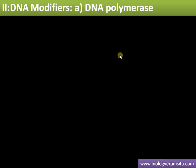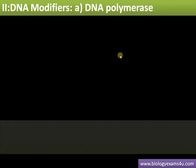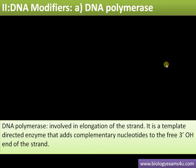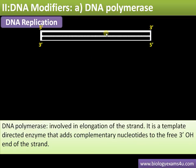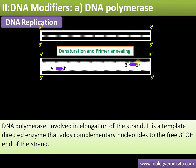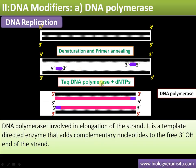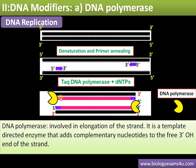The second class of enzymes is DNA modifiers. The first is DNA polymerase, an enzyme involved in elongation of a strand. It adds complementary nucleotides to the free 3'-OH end of a strand. With a primer annealed to a double-stranded DNA molecule, DNA polymerase — such as Taq DNA polymerase — binds to the free 3'-OH end of the primer and elongates the strand using dNTPs. The function of DNA polymerase is the addition of nucleotides complementary to the template strand.